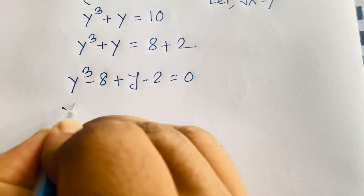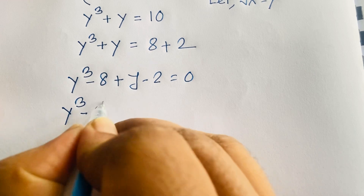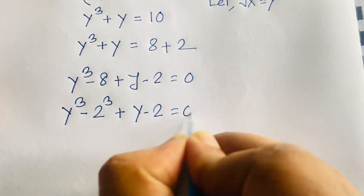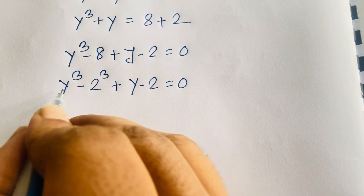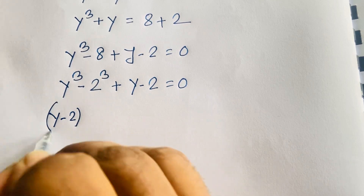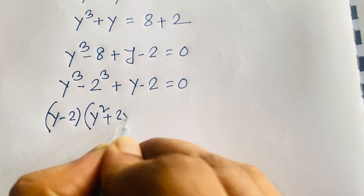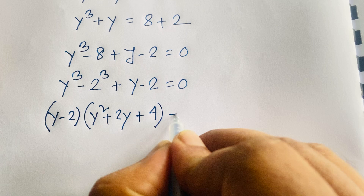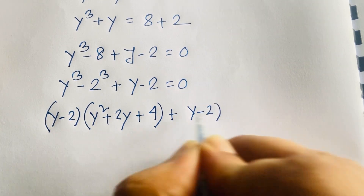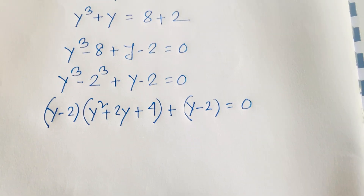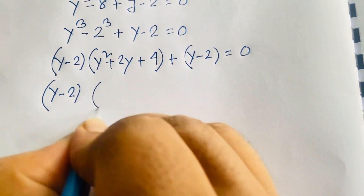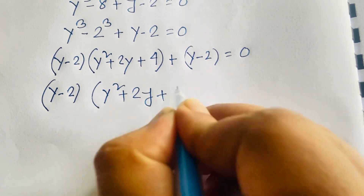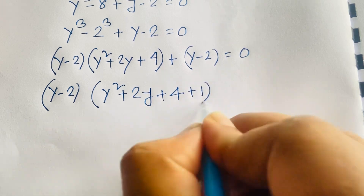Now y³ minus 8 is the same as y³ minus 2³. Using the difference of cubes formula, a³ minus b³ equals (a minus b)(a² plus ab plus b²), with a equal to y and b equal to 2, we get (y minus 2)(y² plus 2y plus 4). Since (y minus 2) is a common factor of both terms, factoring it out gives (y minus 2)(y² plus 2y plus 4 plus 1) equals 0, which is (y minus 2)(y² plus 2y plus 5) equals 0.